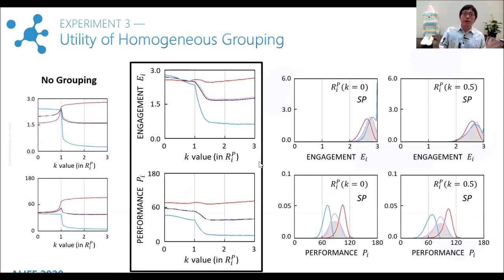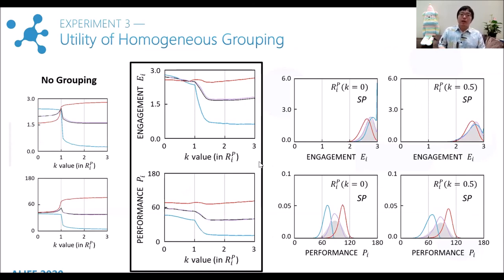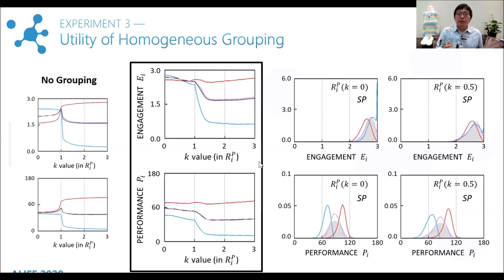Here we show it also helps to ease the negative impact of social comparison. The simulation shows that homogeneous grouping has a limited positive effect on low-ability students — they are still sensitive to elitism. However, it helps high-ability students considerably. Compared with the original situation, high-ability students are much more encouraged and perform much better even if the rewarding scheme is equal rewards. Moreover, from the right-hand side panels, we can see the falling-behind effect has been much improved through homogeneous grouping.